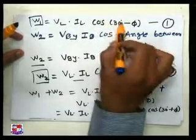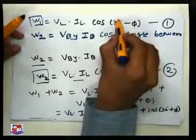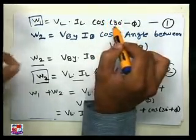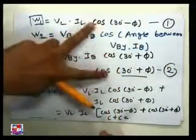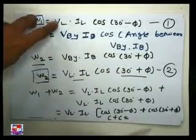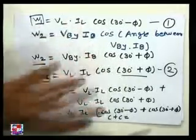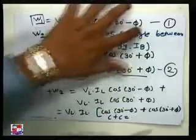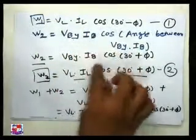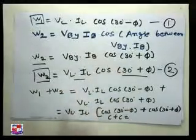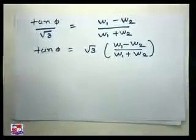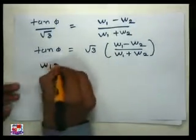VL into IL is equal to cos(30 + φ). When it will be lagging, as we called in the last lecture, it will be lagging; here it will be leading, so we get the opposite direction: cos(30 - φ) and cos(30 + φ). When the power factor is lagging, W1 = VL·IL·cos(30 + φ) and W2 = VL·IL·cos(30 - φ). W2 is always the higher wattmeter reading because cos(30 - φ) is always higher.